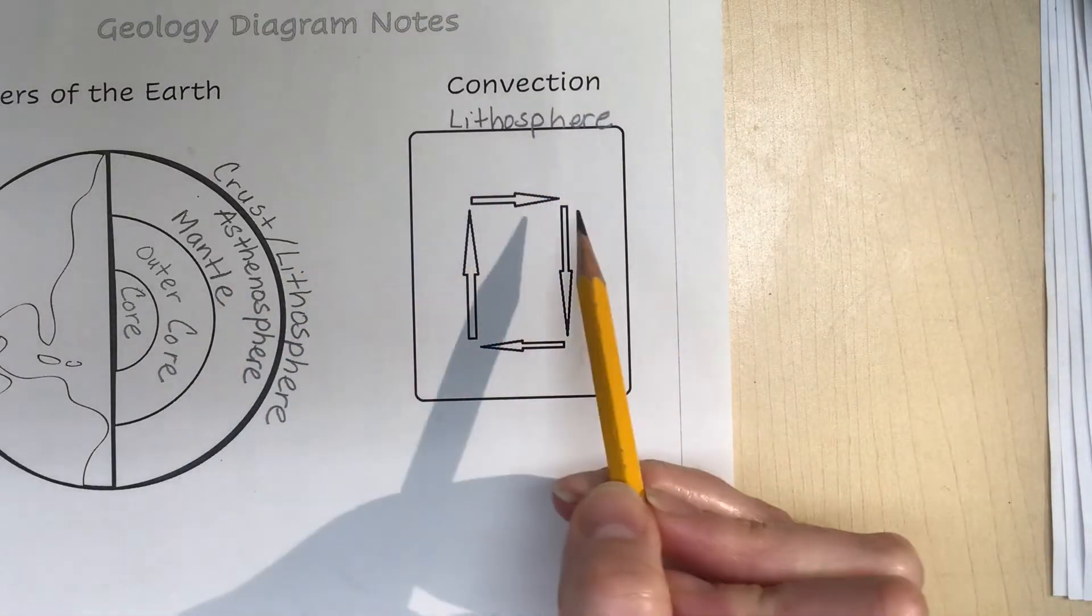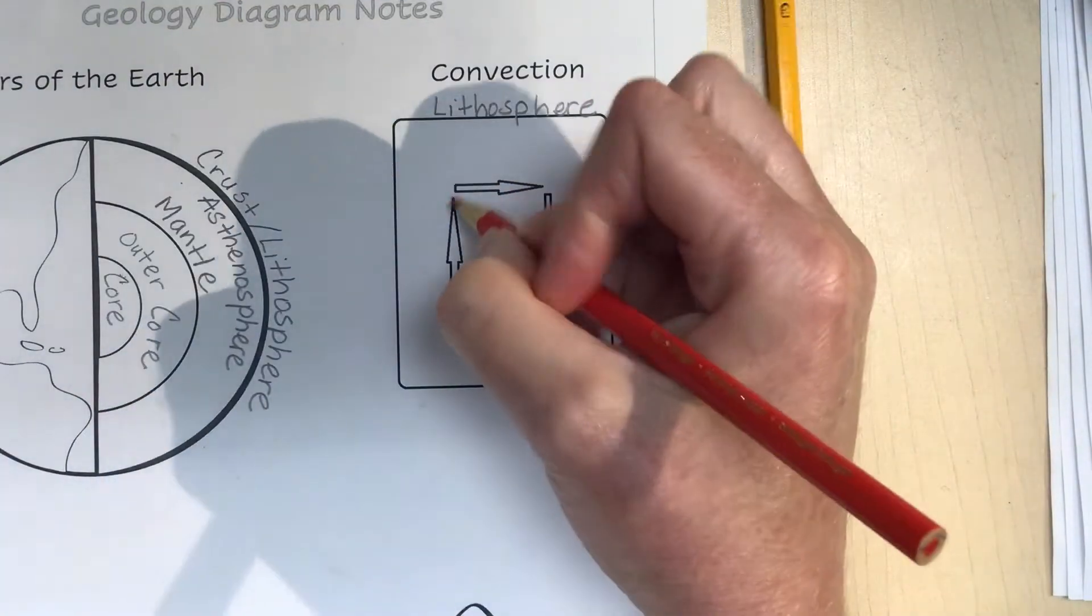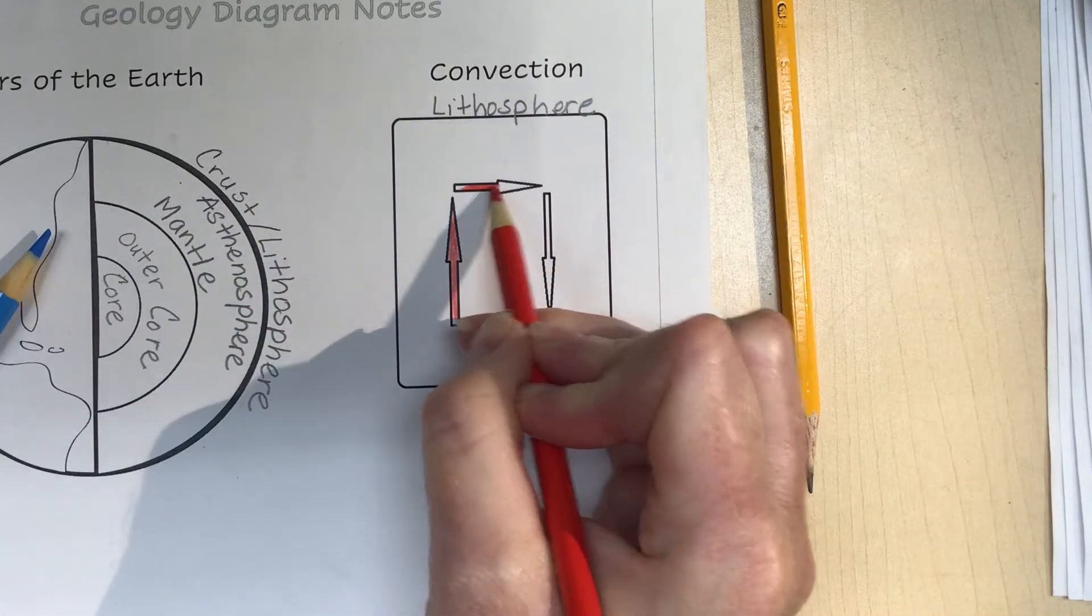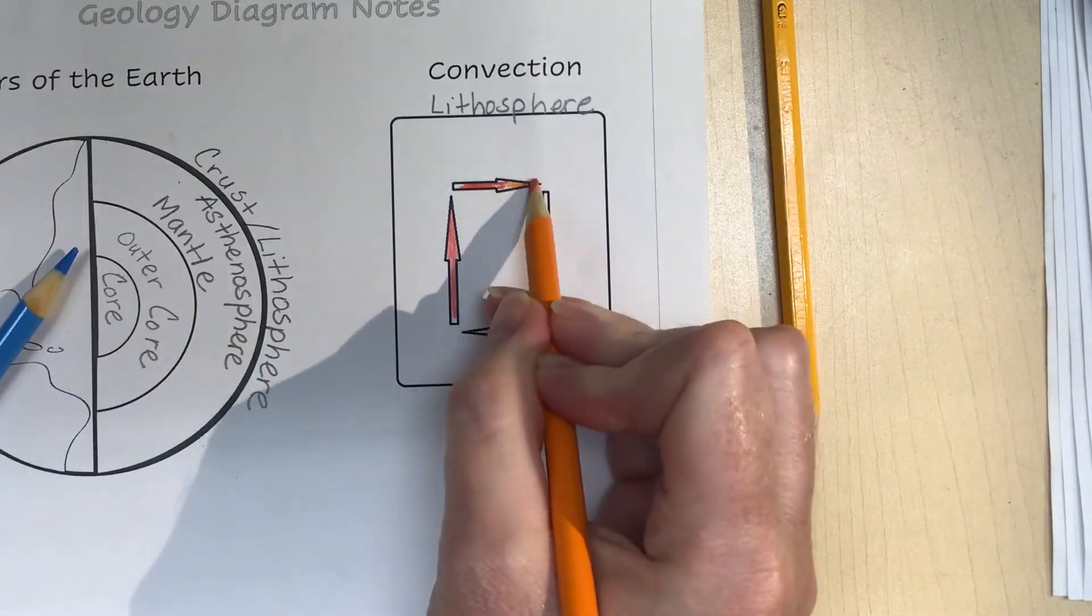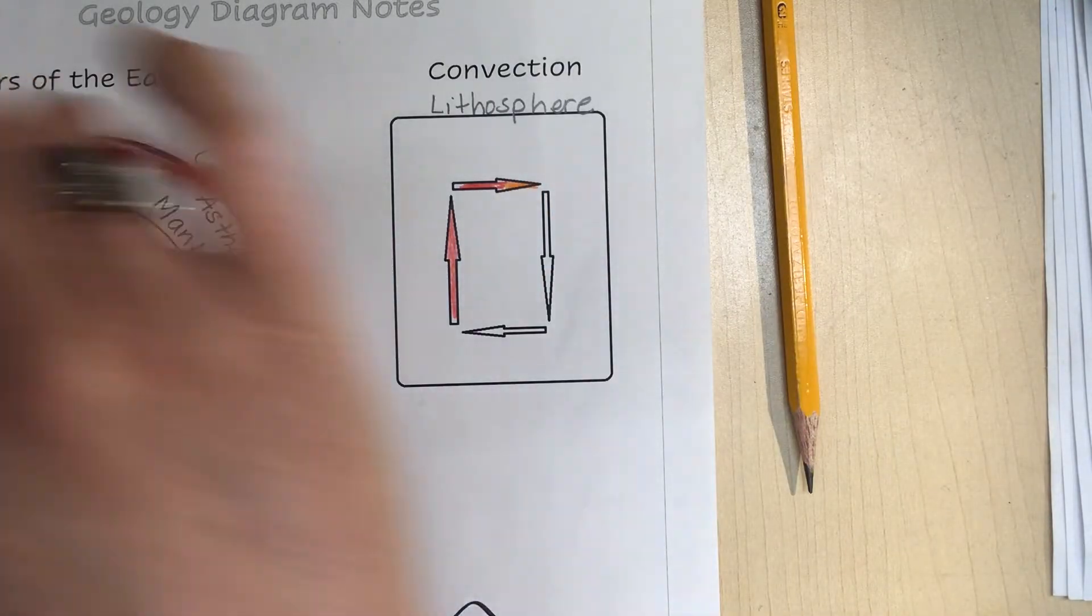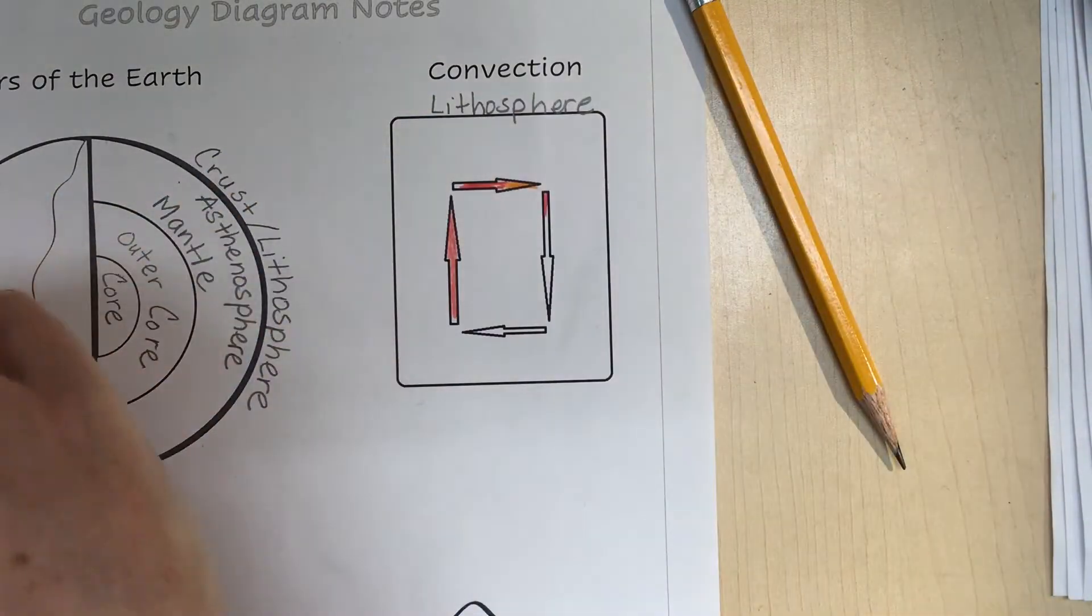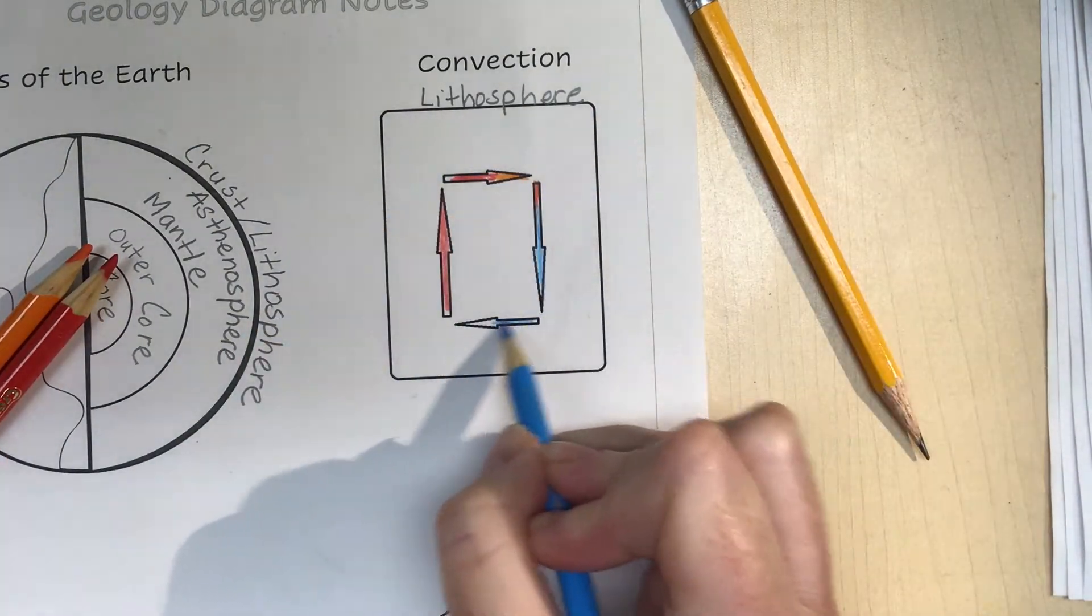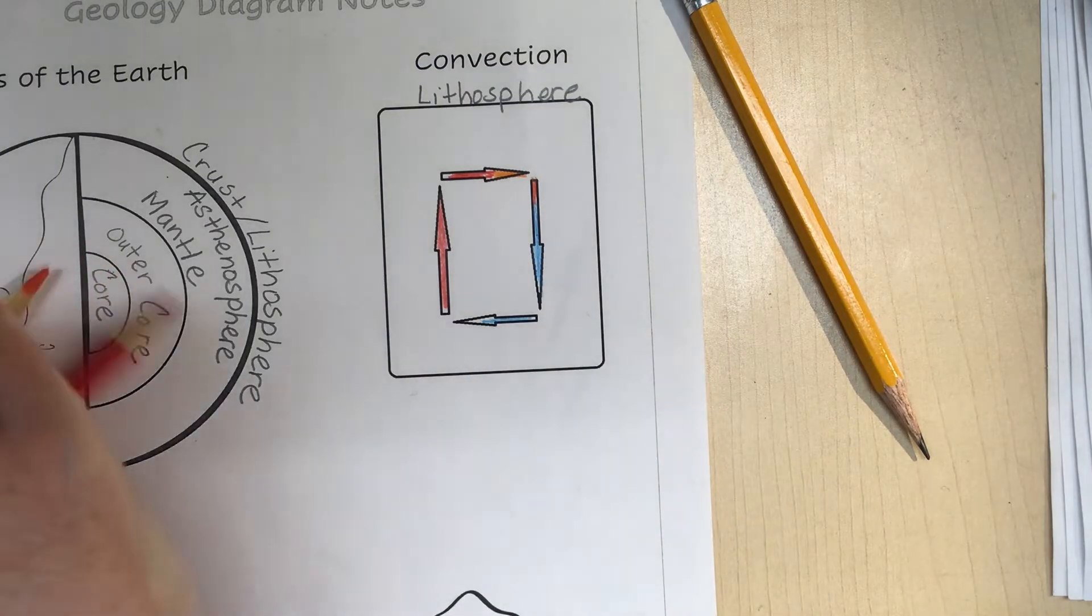This is just under the lithosphere. What happens in the magma is that your warmer magma rises, and it starts to cool off. I'm going to do a little orange to show it's cooling a little bit. As it is dropping, it is cooling off.